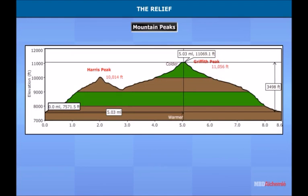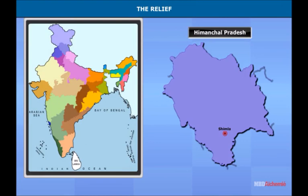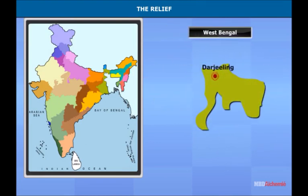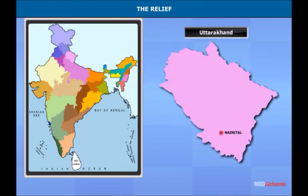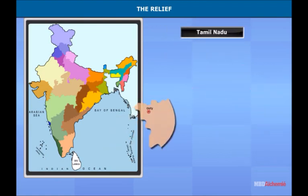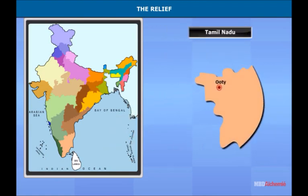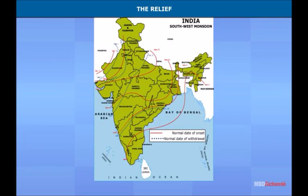The significance of relief is especially seen in two aspects of topography: altitude and direction of mountain ranges. Temperature decreases with altitude — high stations like Shimla, Darjeeling, and Nainital are cooler than the plains. Ooty, lying in the Nilgiris in south India, is also cooler than the land below. As regards the direction of mountain ranges, the triangular shape of peninsular India splits the monsoon winds into two branches: the Bay of Bengal and the Arabian Sea.